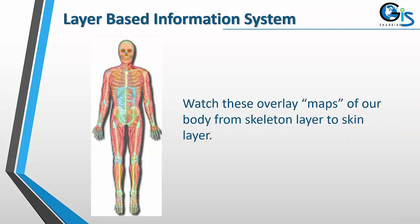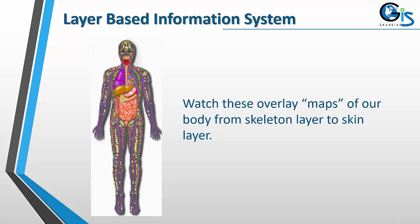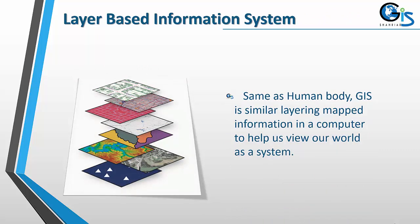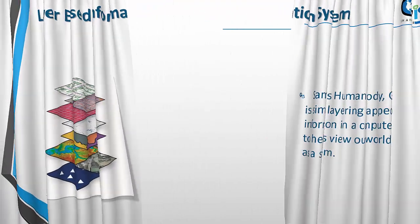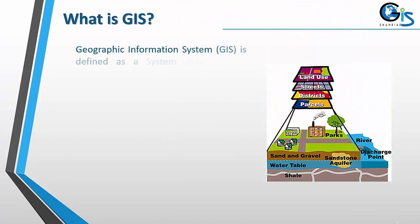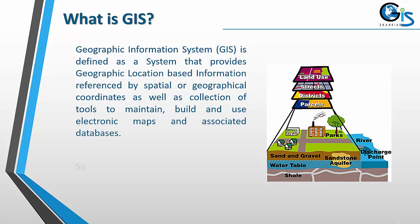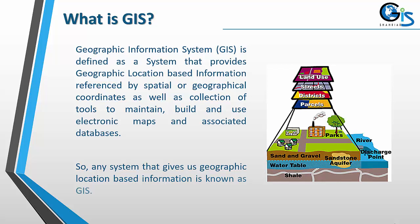GIS is a layer-based information system. Watch this overlay of maps of our body, from skeleton layer to skin layer. Same as the human body, GIS is similar layering of mapped information in a computer to help us view our world as a system. Geographic Information System is defined as a system that provides geographic location-based information referenced by spatial or geographic coordinates, as well as a collection of tools to maintain, build and use electronic maps and associated databases. Any system that gives us geographic location-based information is known as GIS.